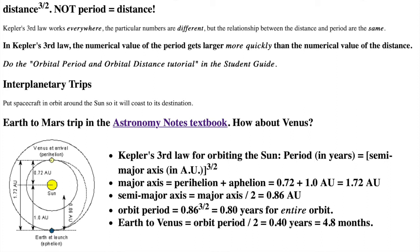So let's figure it out now. Remember for Kepler's third law for orbiting the sun, the period in years equals the semi-major axis in AU to the 3 halves power. The major axis of the spacecraft orbit equals the perihelion plus the aphelion, which is Venus's distance from the sun, 0.72 AU, plus Earth's distance from the sun, 1.0 AU, equals 1.72 AU. The semi-major axis equals half the major axis equals 0.86 AU. Plug that into Kepler's third law.